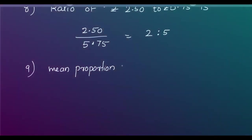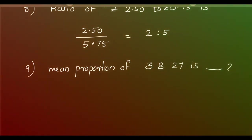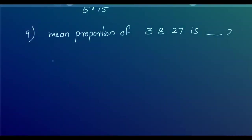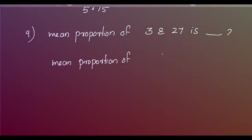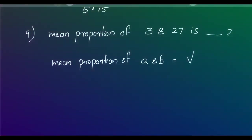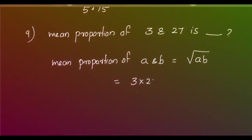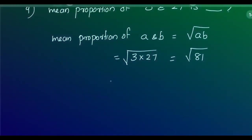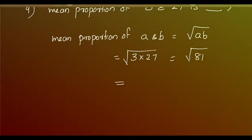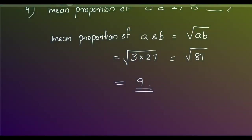The ninth question: find the mean proportion of 3 and 27. The mean proportion of A and B is equal to the square root of A × B. So it is the square root of 3 × 27 = square root of 81, which equals 9. The mean proportion of two numbers is the square root of their product.